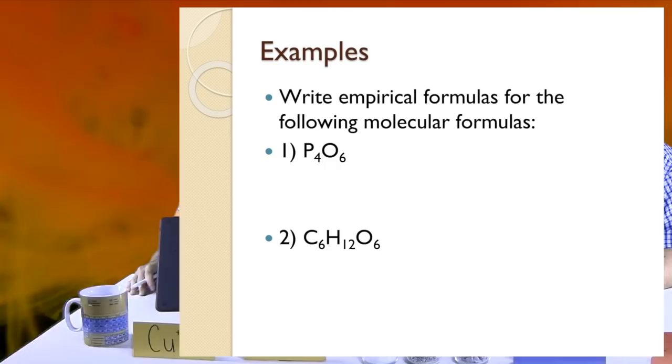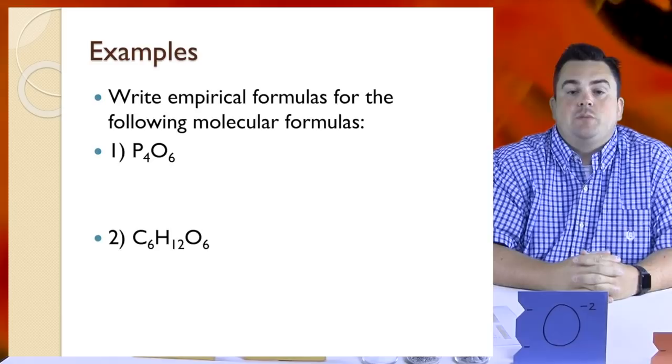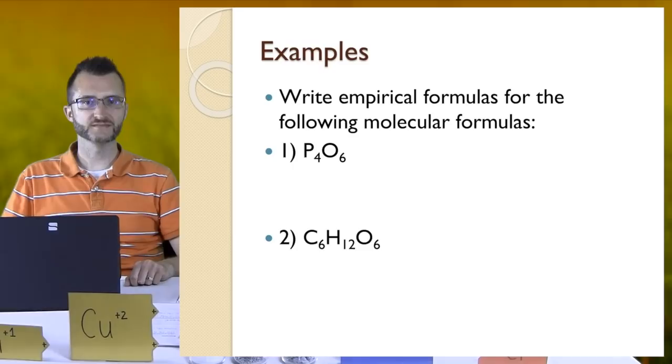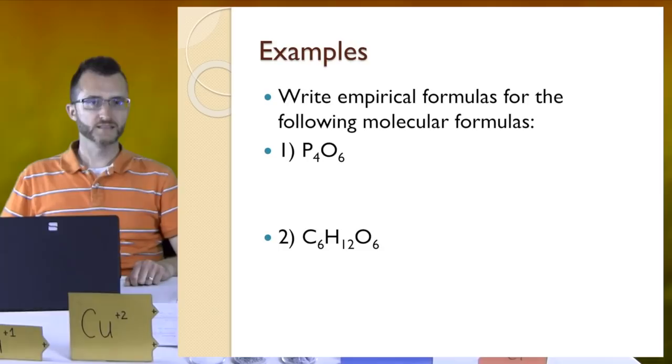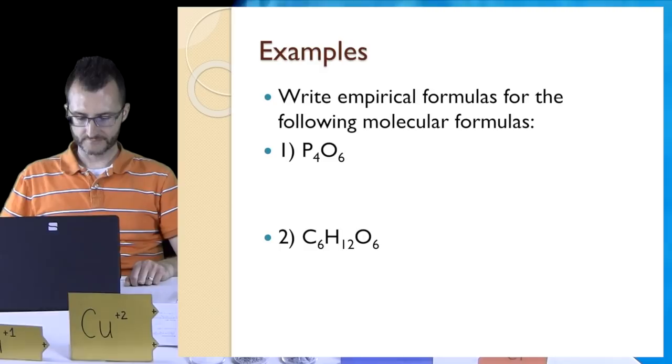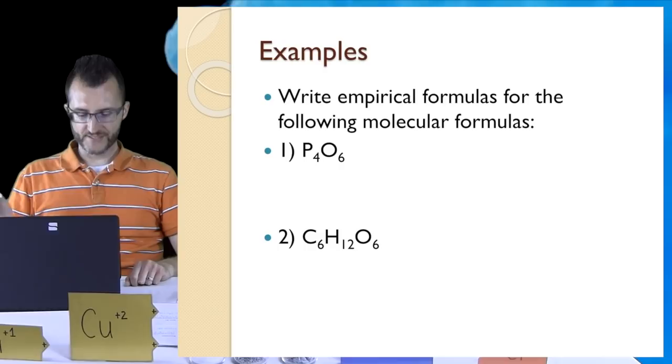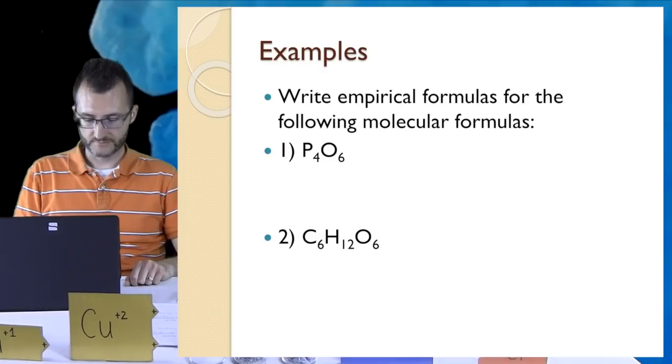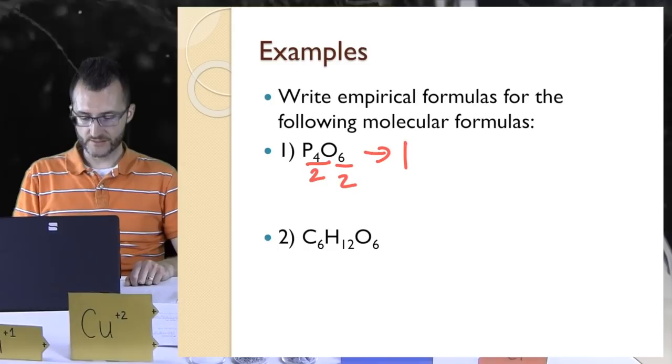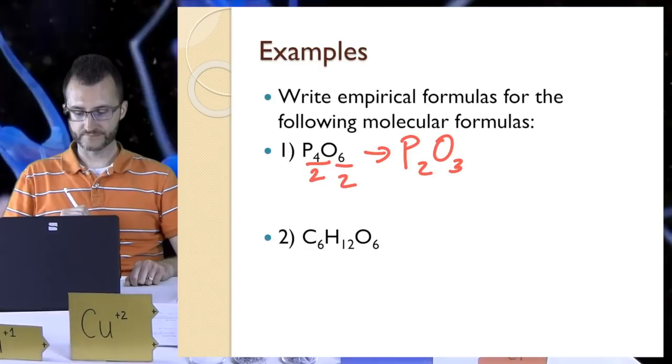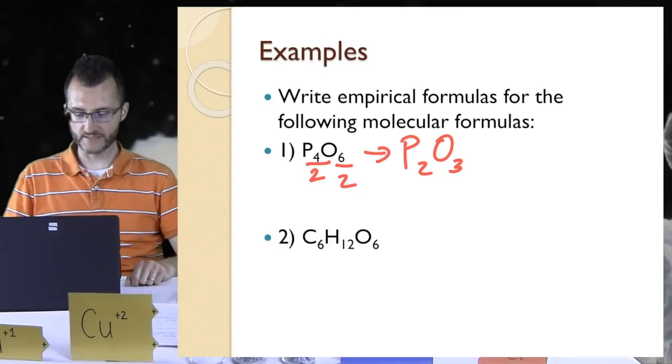We're going to write empirical formulas for the following molecular formulas. Number one, we've got P4O6. We want to look at both those subscripts, the 4 and the 6, and see what they're commonly divisible by. They're both divisible by 2. So we're going to divide all subscripts in this formula by 2. P would be 2 now, and O would be 3. So the empirical formula for P4O6 is P2O3. And I couldn't reduce that anymore.